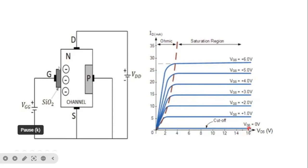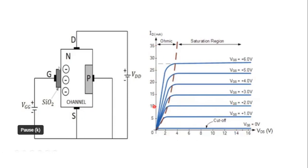The cutoff region is where VGS, the gate to source voltage, is equal to zero — that characteristic is called the cutoff region. When we increase VGS, the current ID and VDS increase. The saturation region is where, even though the drain-to-source voltage keeps increasing, the current remains constant. For example, at VGS equal to 2 volts, the current is constant at 10 milliamps even as VDS increases from 6 to 10 volts.